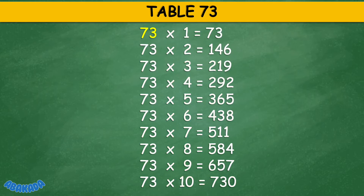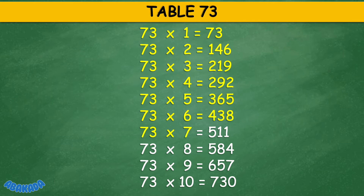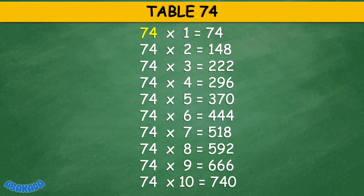Table 73: 73 times 1 equals 73, 73 times 2 equals 146. 73 times 6 equals 438, 73 times 7 equals 511, 73 times 8 equals 584, 73 times 9 equals 657, 73 times 10 equals 730.